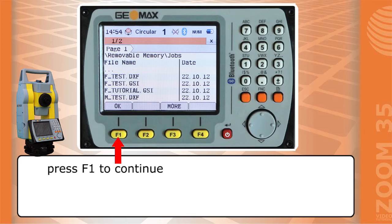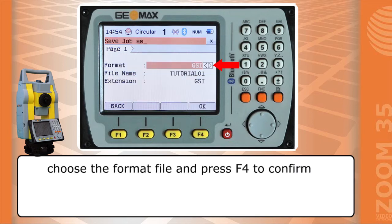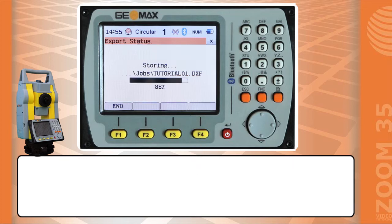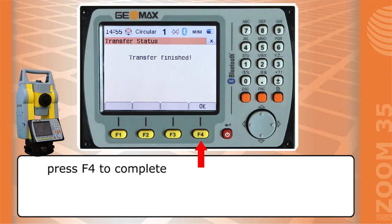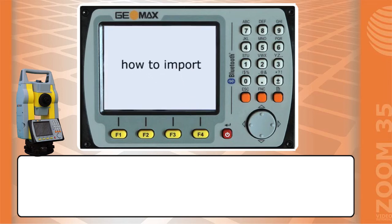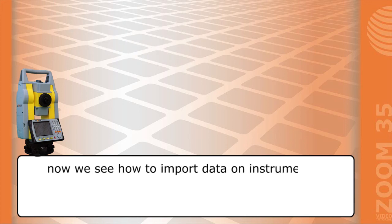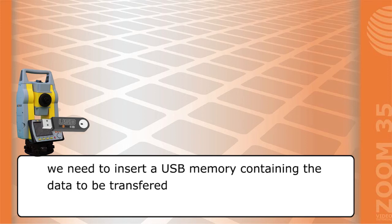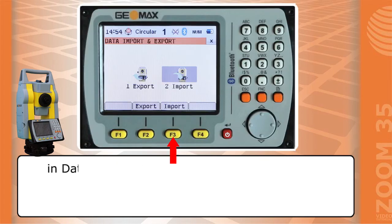Press F4 to continue, choose the file format, and press F4 to confirm. Press F4 to complete the export. Now we see how to import data on the instrument. We need to insert a USB memory containing the data to be transferred.